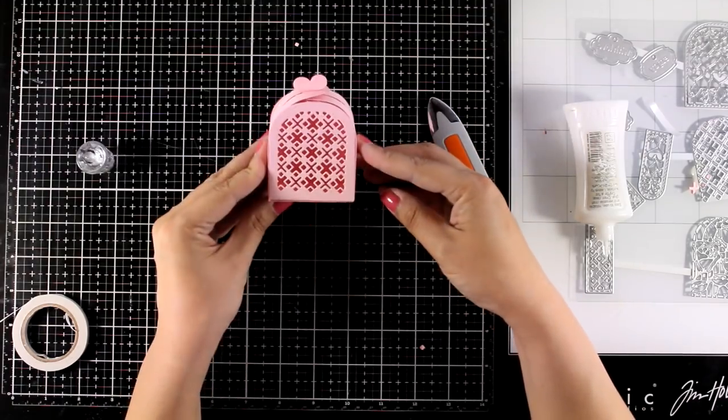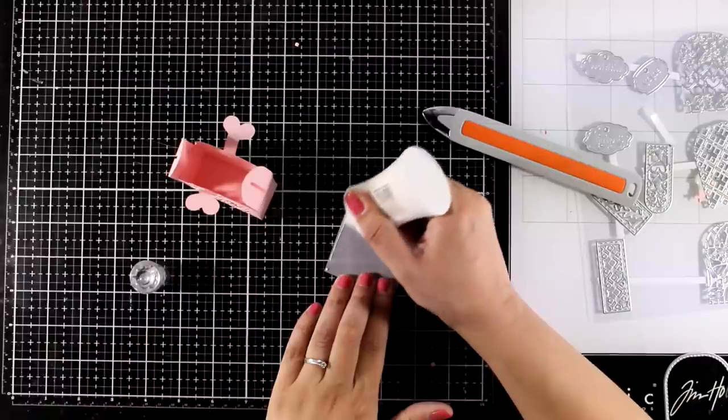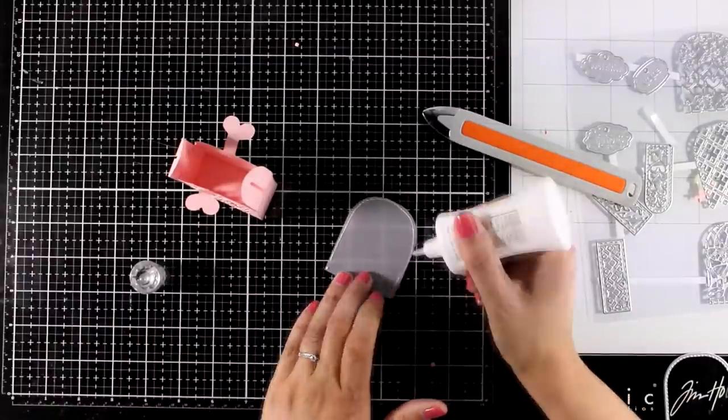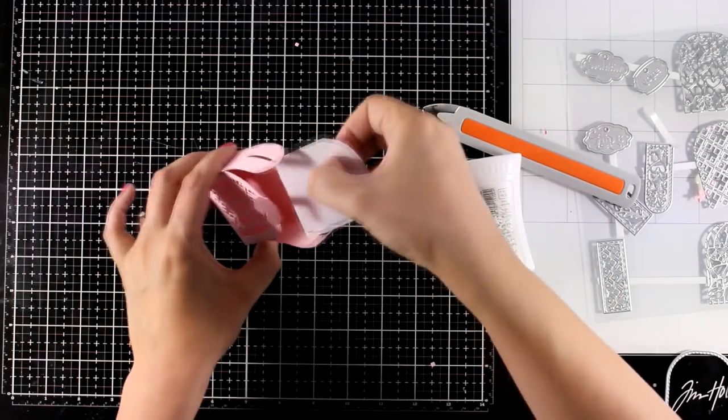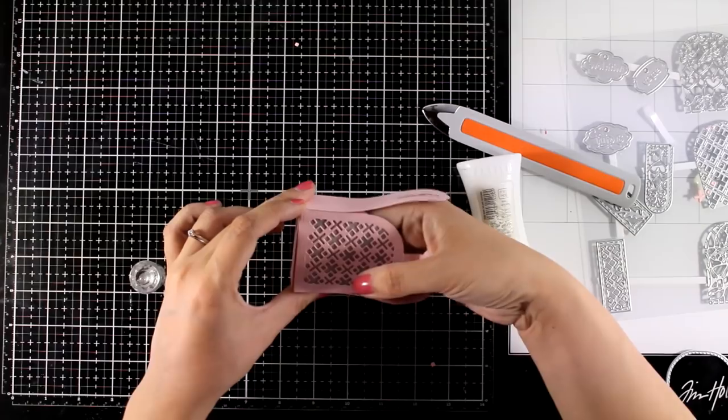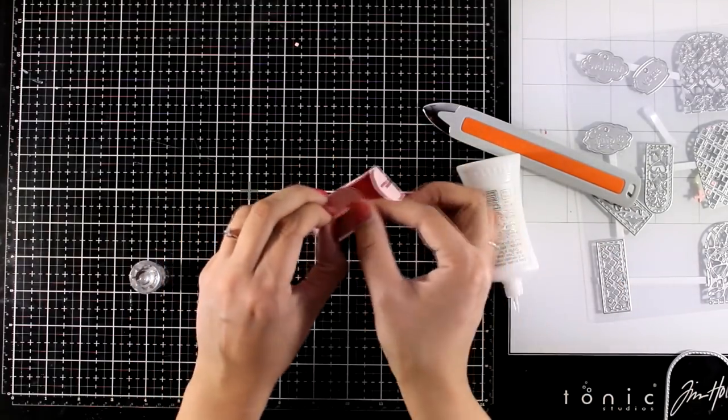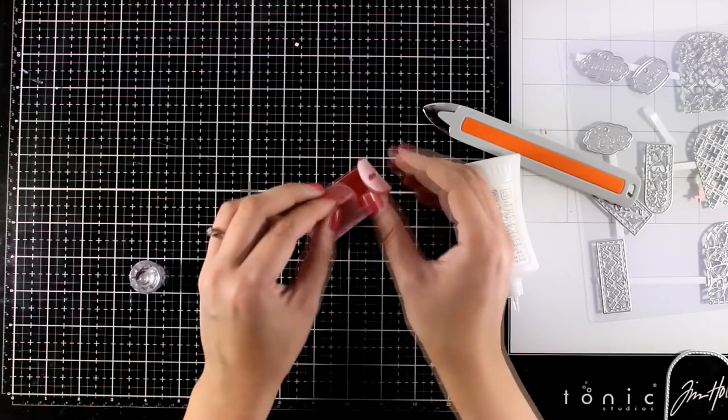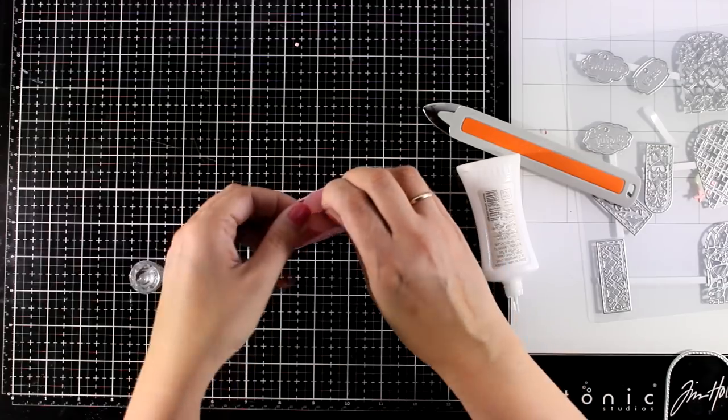Now just to take it a step further I'm going to show you different ways on how you can embellish it even more. So here I have a piece of vellum I'm adding glue only on the outer edges and then I'm going to slide it through just behind the window. Now this is a step that you should have done before you put your box together it's much easier that way. And again instead of using vellum just to protect the contents inside you can use acetate.